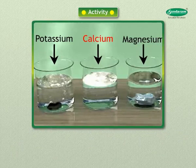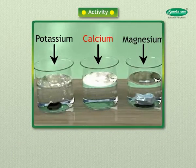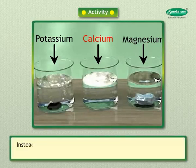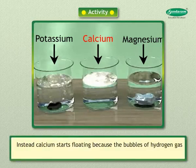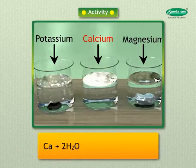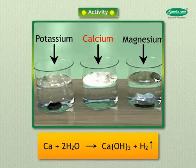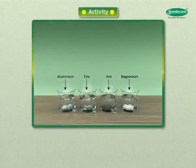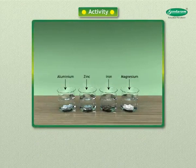Calcium reacts with water less vigorously; hence the heat evolved is not sufficient for hydrogen to catch fire. Instead, calcium starts floating because bubbles of hydrogen gas stick to the surface of the metal. Ca + 2H₂O → Ca(OH)₂ + H₂.